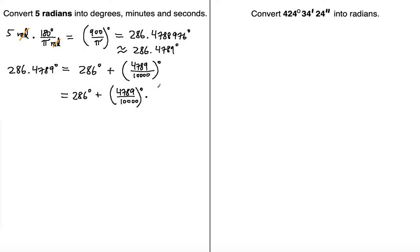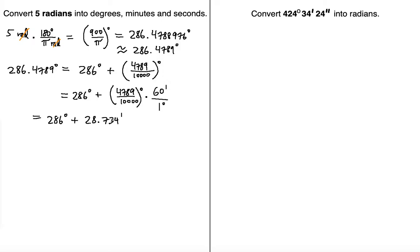Now let's convert it into minutes. We know that 60 minutes equals 1 degree, so the degrees will be canceled out. This gives us 286 degrees plus 28.734 minutes. You do this in your calculator and you should get 28.734 minutes.